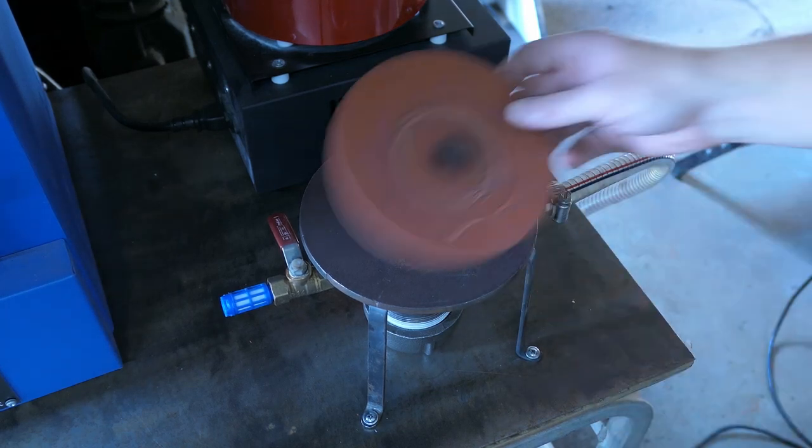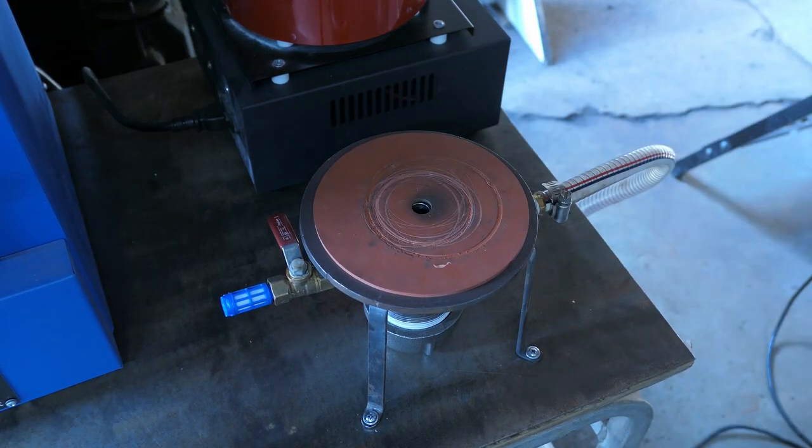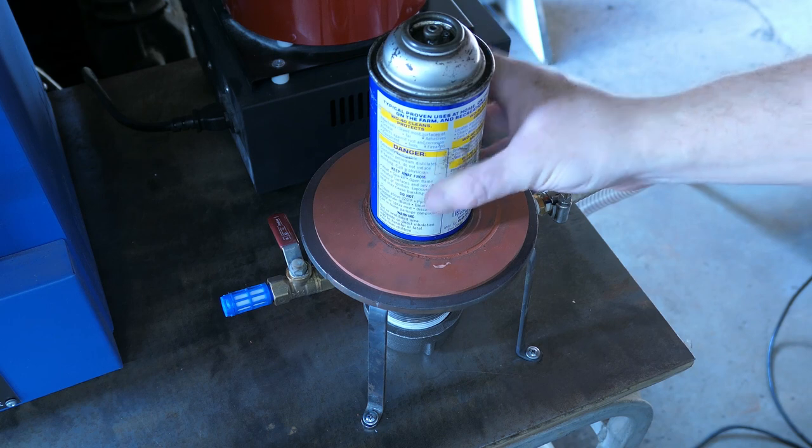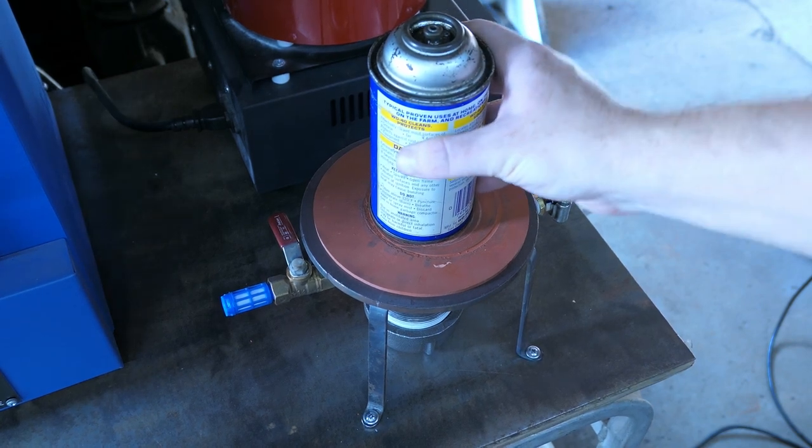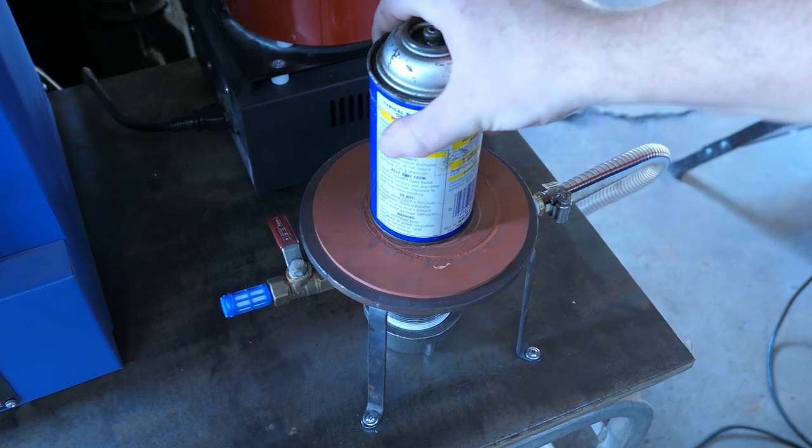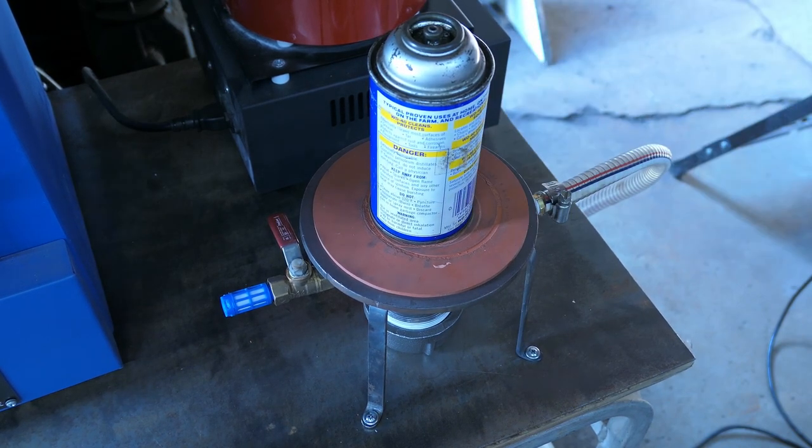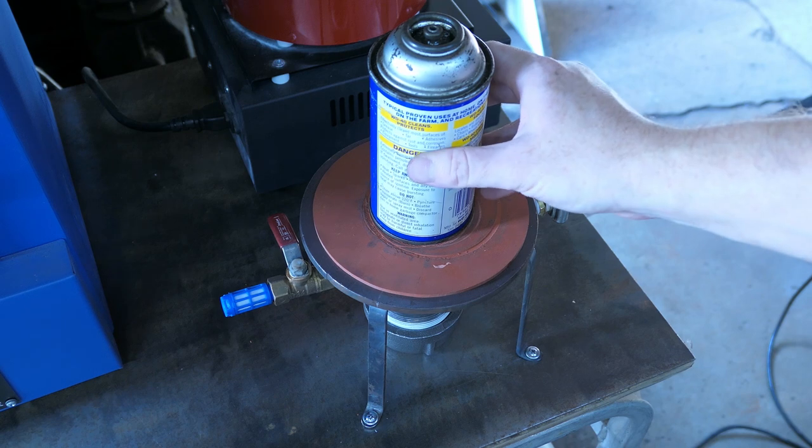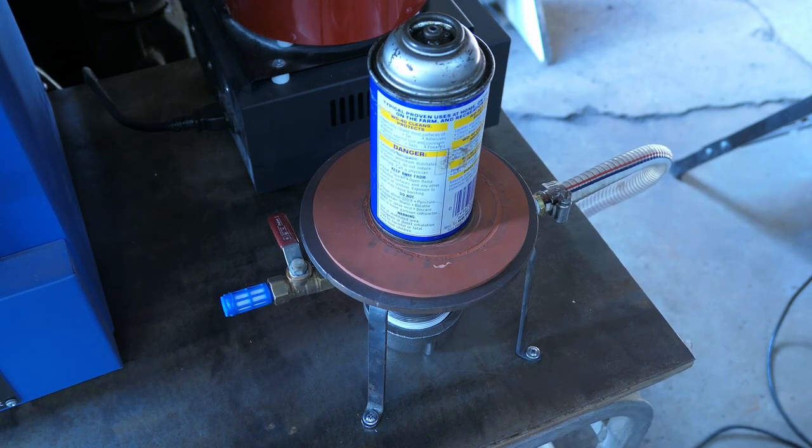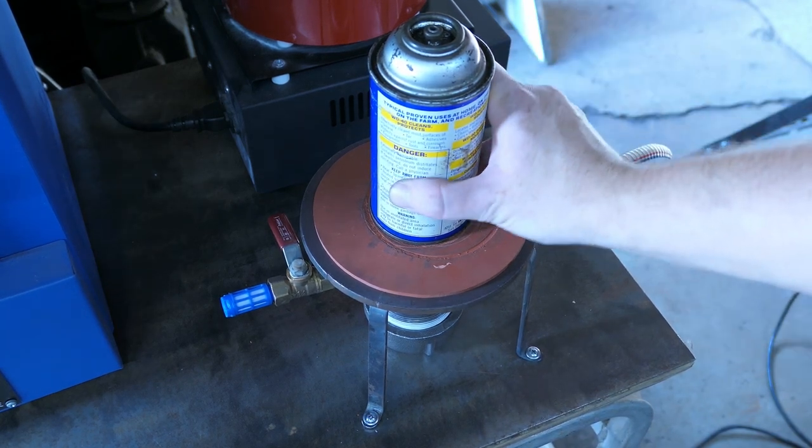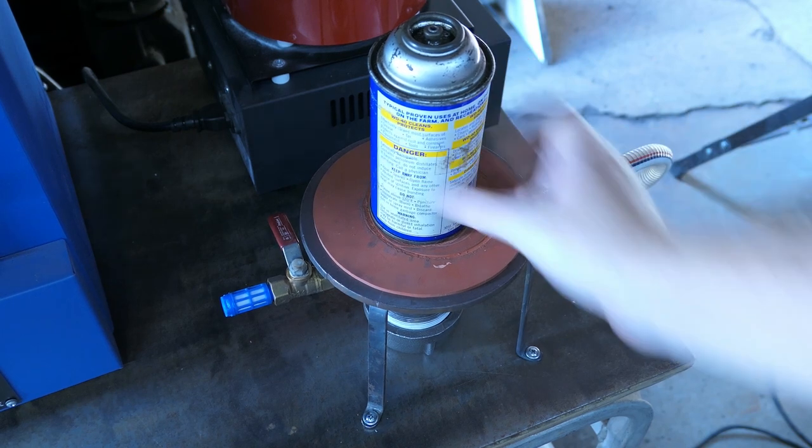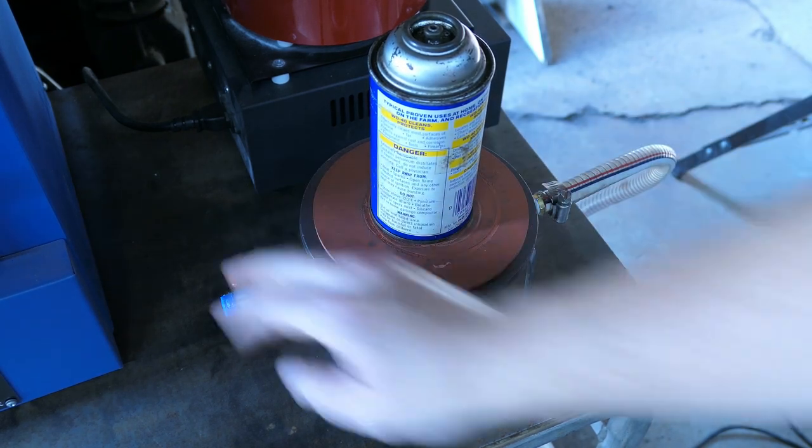And I decided not to add a gauge to this vacuum table setup, just because during use it's really easy to feel whether or not you have a good seal on the flask. And you can see right after placing it on top of the gasket, it should be really secure. So I don't think that I'll need a gauge, but of course I could easily add one in the future if I decide that I need one.